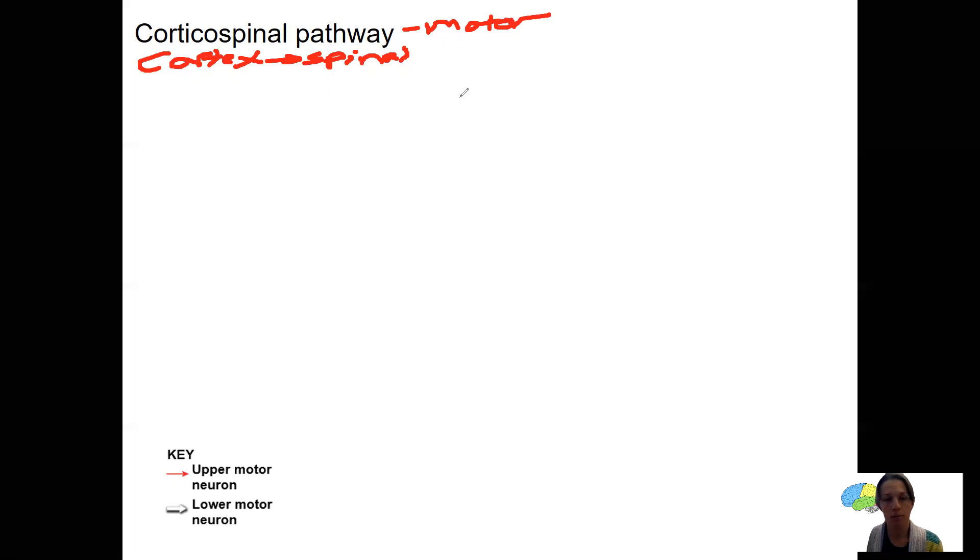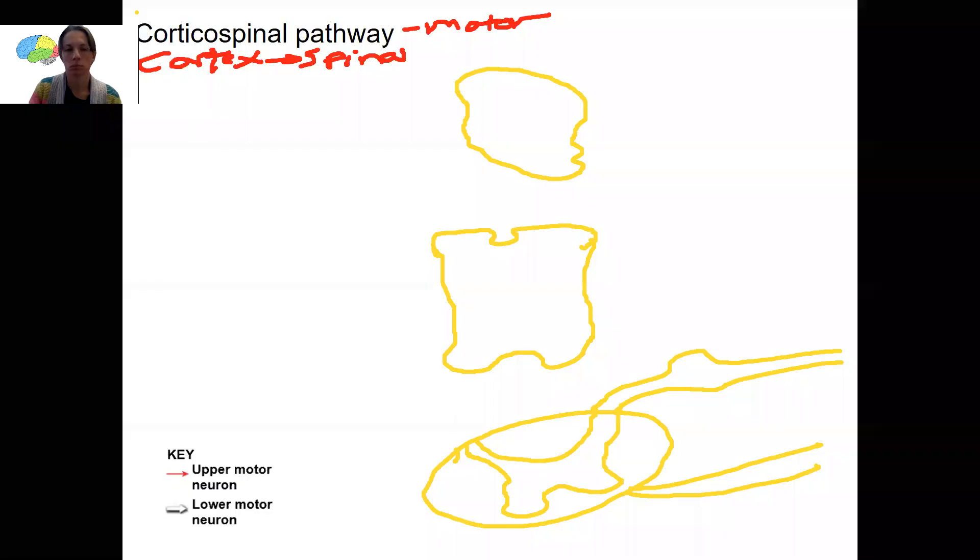So I'm actually going to draw for you the primary motor cortex. These are my grooves and fissures of the brain. And then I'm going to need to draw a few other brain regions.